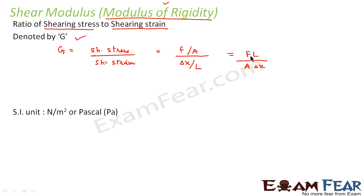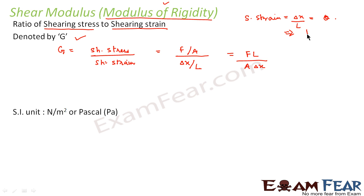This is based on shearing strain being equal to delta X by L. We also know that shearing strain is equal to theta — shearing strain is delta X by L, that is the small displacement per unit length, which is also equal to theta. So we can say 1 by theta equals L by delta X, and using this alternative definition, shear modulus can be written as F divided by A theta.